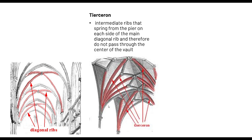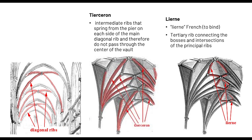During the Gothic era, architects moved on from just having the plain diagonal ribs, adding another member of the vault called the Tierceron. The Tierceron is an intermediate rib that springs from the pier on each side of the main diagonal rib, and therefore does not pass through the center of the vault. Remember that the center of your vault is your main diagonal rib. The Tierceron is an intermediate or secondary rib. Another addition to the vaulting system compared to the Romanesque is the Lierne. The Lierne stands for 'to bind' in French. If the Tierceron is a secondary rib, the Lierne is a tertiary rib connecting the bosses and intersections of the principal ribs.